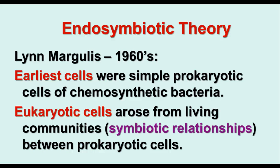In the 1960s, a scientist named Lynn Margulis came up with a theory called the endosymbiotic theory. Her theory was that the earliest cells were simple prokaryotic cells of chemosynthetic bacteria, and that eukaryotic cells arose from communities between those prokaryotic cells in which the prokaryotes were incorporated into and engulfed inside larger cells and became living symbionts within the cells.